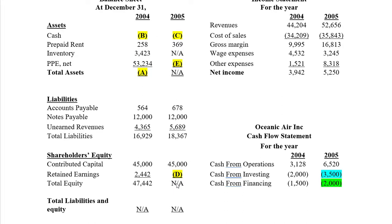I've started in the order that it should be done — the easiest path for completing this. If you don't start with A and start with some of the other ones, it'll be a bit harder. The way you get A, total assets, is from using the equation we've written on the board every single class: Assets equals liabilities plus owner's equity. So you take the liabilities and owner's equity and add those two to get A.